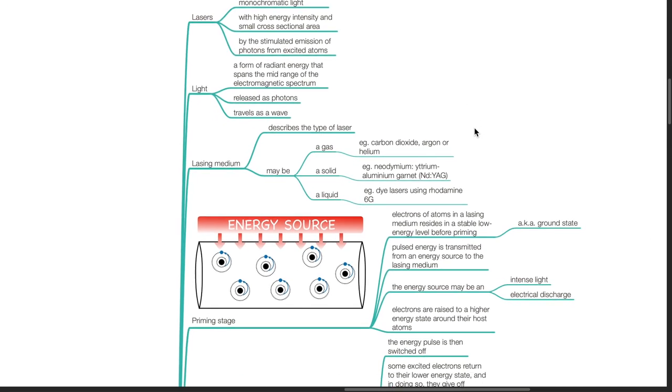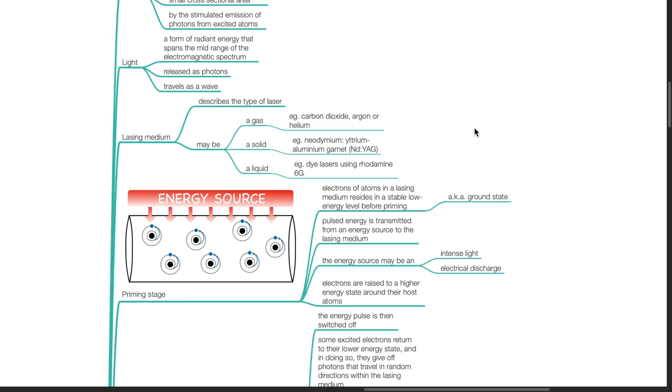The lasing medium describes the type of laser. It may be a gas, such as carbon dioxide, argon or helium. It may be a solid, such as neodymium, yttrium aluminium garnet, NDYAG. Or a liquid, such as dye lasers, using rhodamine 6G.